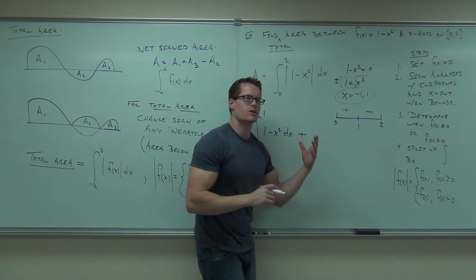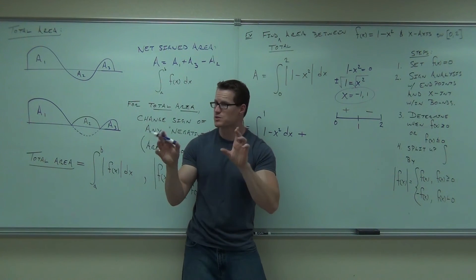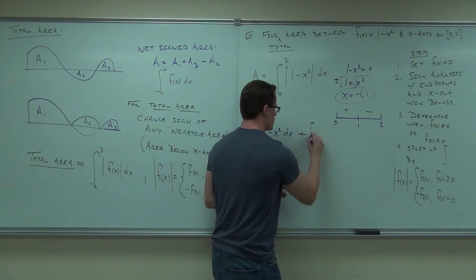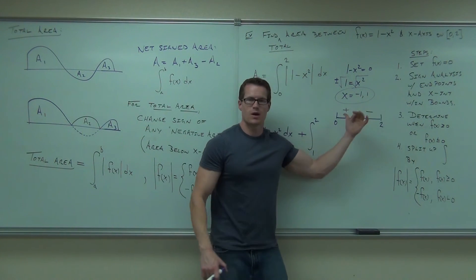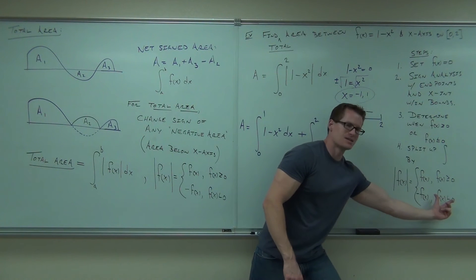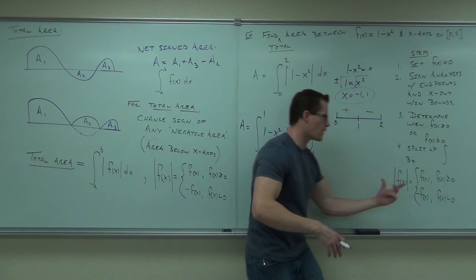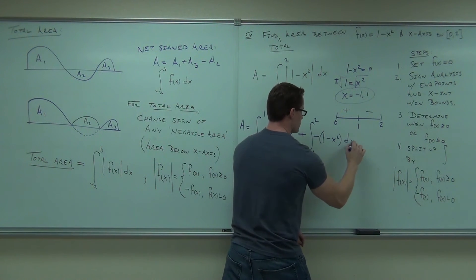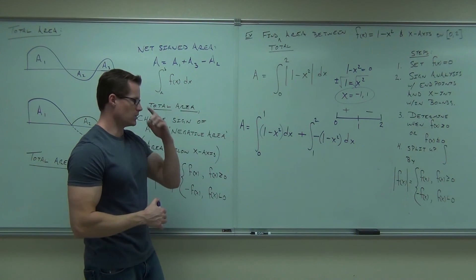We can split the integral from zero to two into zero to one, and then one to two — it's continuous, no breaks. Between one and two, our function is negative, which means it's below the x-axis. Since f(x) is negative there, we can't just drop the absolute value — we have to change the sign. So we write negative of (1 minus x²) for that region.